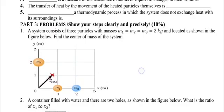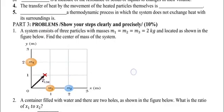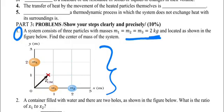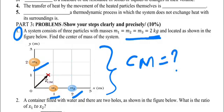Now let us proceed to the worked problem section. The first problem: a system consists of three particles where m1 = m2 = m3 = 2 kilograms, located as shown in the figure below. Find the center of mass of the system. m1 is located on the x-axis, m2 is located on the x-axis, and m3 is located on the y-axis.